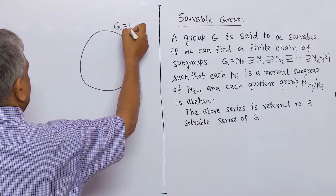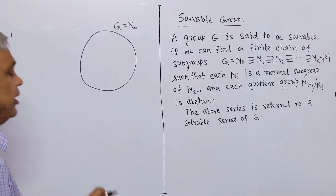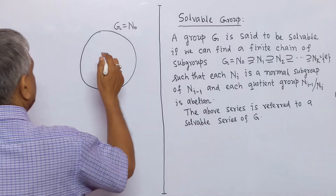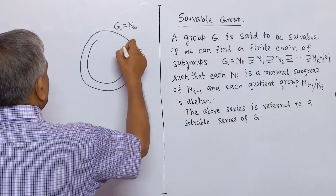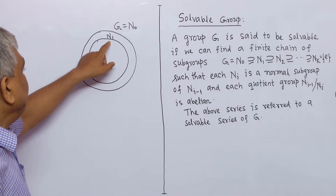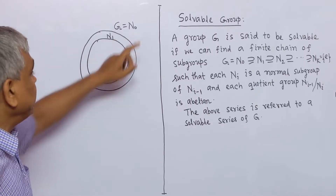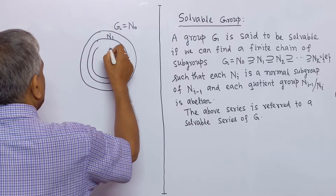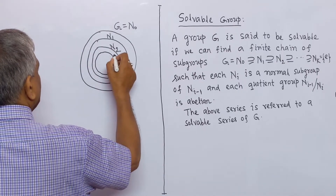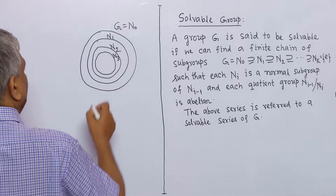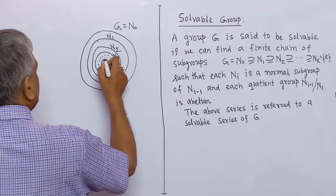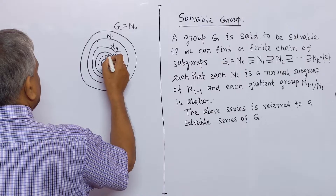Let G equal to N₀. If we can find a finite chain of subgroups of G, that is, let N₁ be a subgroup of N₀, and N₁ is a normal subgroup of N₀. Similarly, N₂ is a normal subgroup of N₁, N₃ is a normal subgroup of N₂. In this way, we get a finite chain of subgroups, and lastly we get the set containing only the identity element.